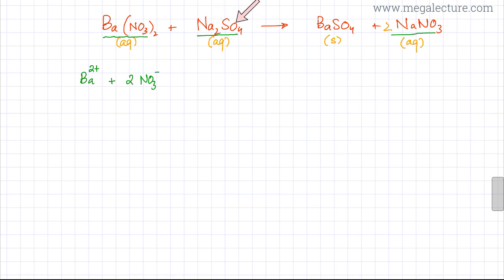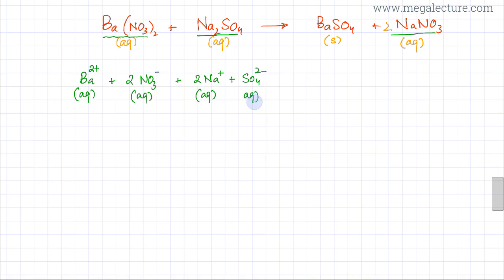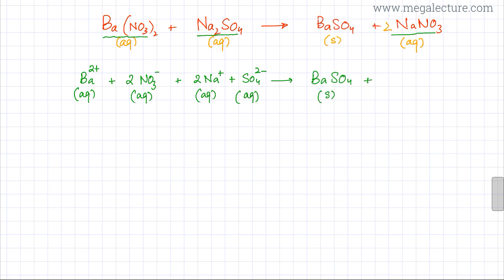The same happens with sodium sulfate: there are two sodium ions and one sulfate ion. In scattered form, the two sodium ions are no longer together, so you write a coefficient of 2, and the sulfate has also dissociated — all in aqueous state, roaming around in solution. Barium sulfate is insoluble, so it remains as a solid. Sodium nitrate also dissociates into two sodium ions and two nitrate ions, also in aqueous state.